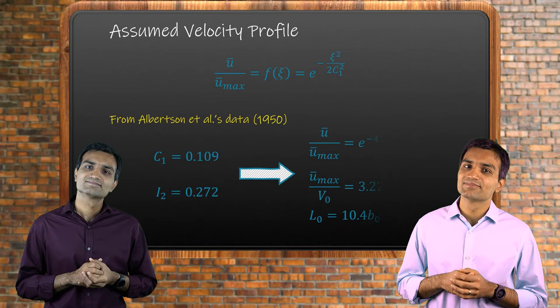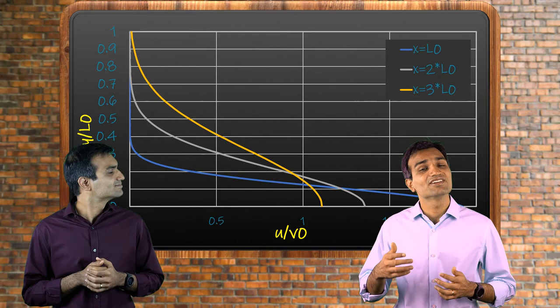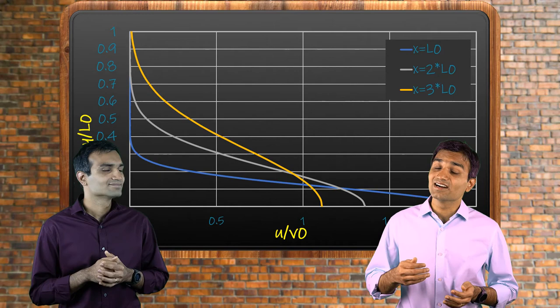The obtained velocity profiles at various axial locations are plotted. In the case of turbulent jets, its centerline velocity decreases as it travels farther. This decay occurs as square root of x.